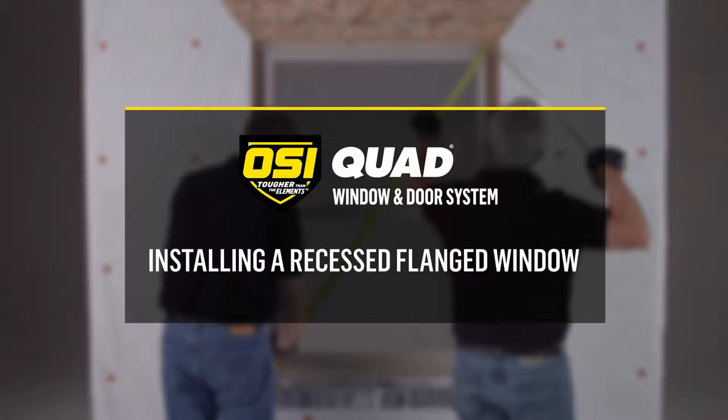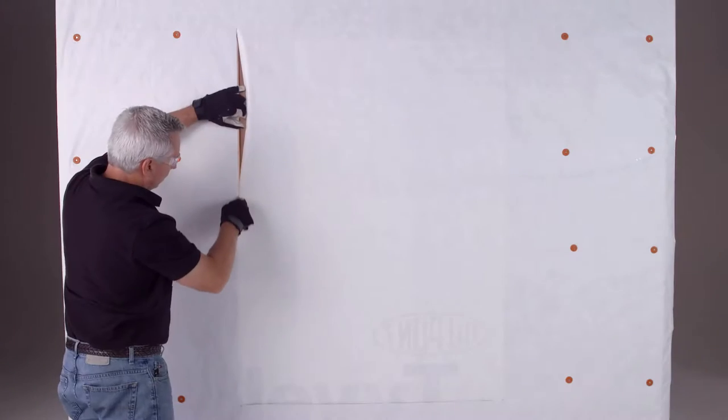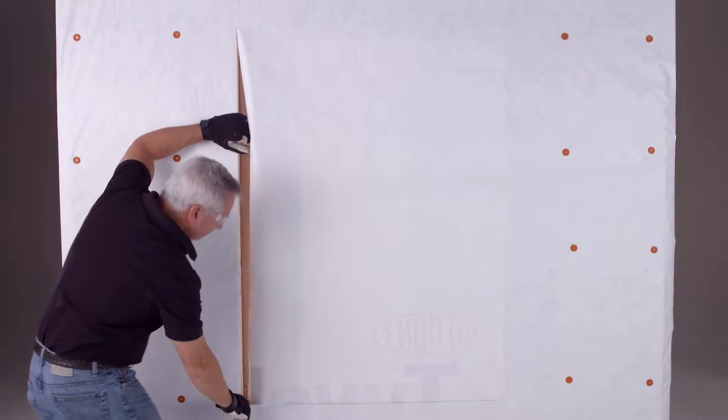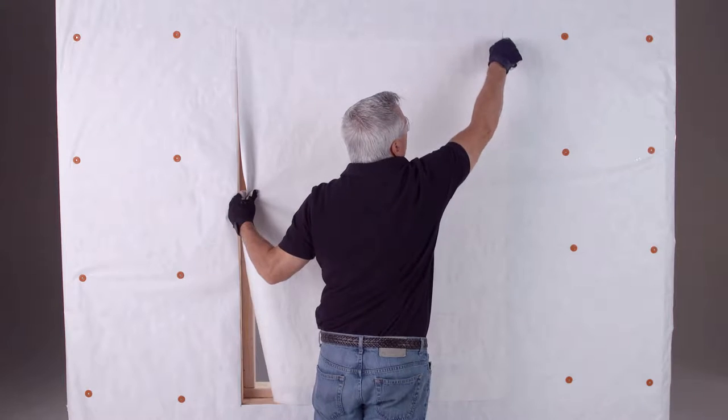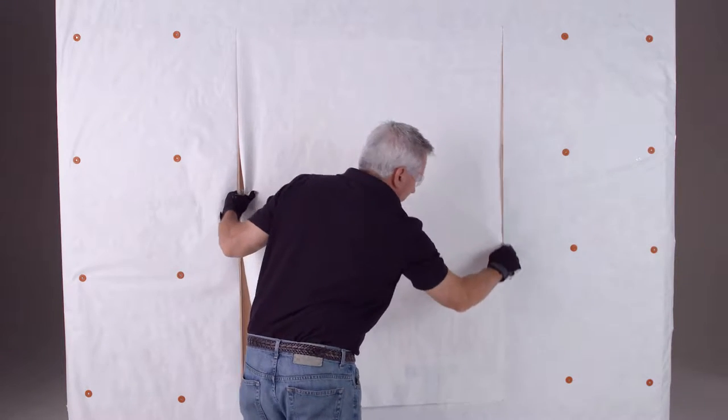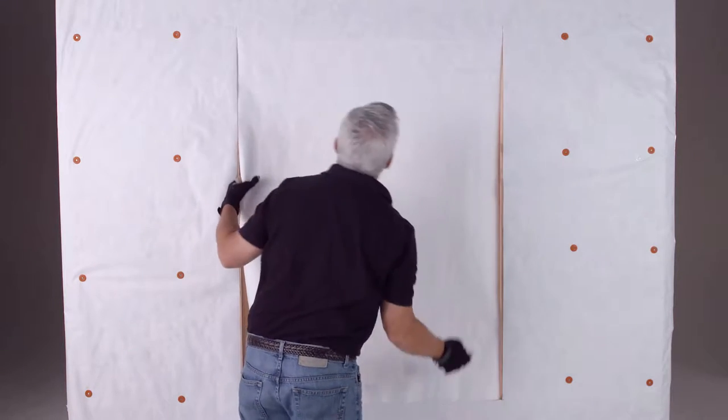Welcome to the OSI brand's best practices for applying the OSI Quad window and door system for a flanged window in a recessed opening. There are numerous ways to flash a window into a recessed opening. We will be applying the flashing to the recessed jams with a WRB already in place.